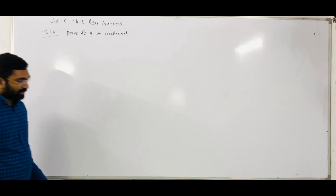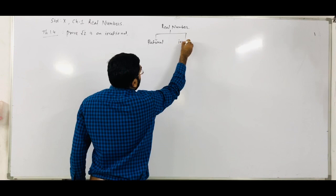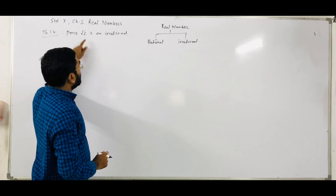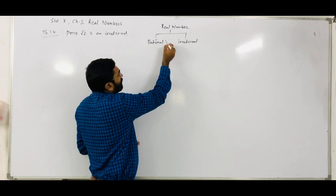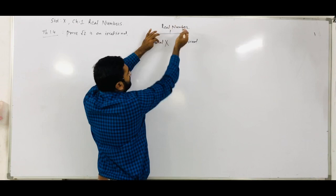Now, all of you know that in real numbers there are rational numbers and irrational numbers. For proving the irrationality, whatever the number, we must first assume that it is a rational number. Then after, we prove that this is a wrong assumption — ultimately it becomes an irrational number. Because if any number is not rational, then it is irrational. So that way we prove irrationality.